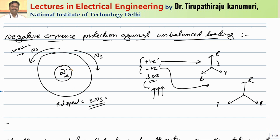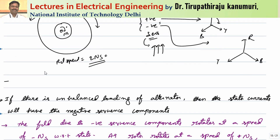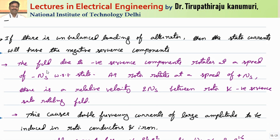The rotor core will experience two types of losses: hysteresis loss and eddy current loss. Both depend on the frequency of magnetic reversals. In this case, because the stator negative sequence field rotates at ns and the rotor rotates at ns in the opposite direction, the relative speed is 2ns, meaning the frequency of hysteresis and eddy currents is two times the normal frequency. Because of this, both losses increase significantly.